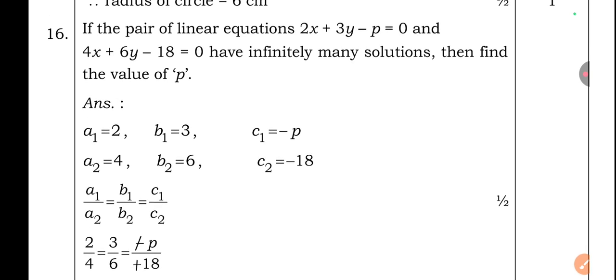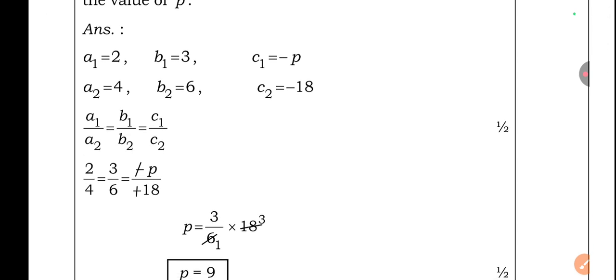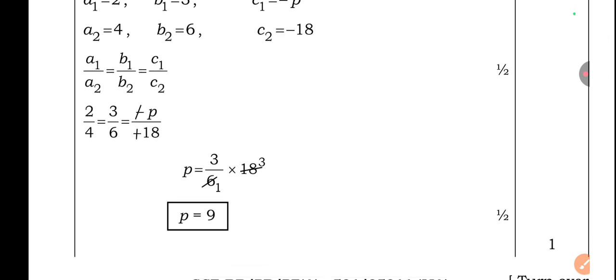Question 16: If the pair of linear equations 2x + 3y − p = 0 and 4x + 6y − 18 = 0 has infinitely many solutions, find p. Using the condition a₁/a₂ = b₁/b₂ = c₁/c₂: 2/4 = 3/6 = p/18. Simplifying: 3/6 × 18 = p, so p = 9.